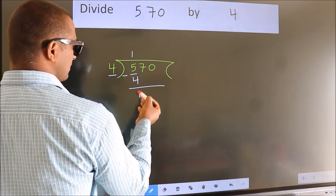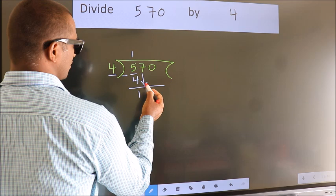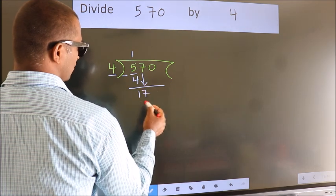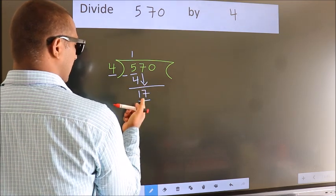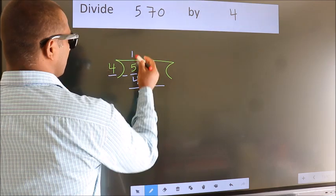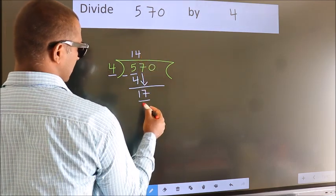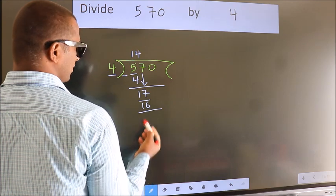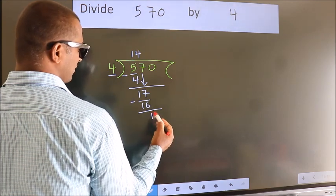After this, bring down the next number. So, 7 down. So, 17. A number close to 17 in the 4 table is 4 times 4 equals 16. Now we subtract. We get 1.